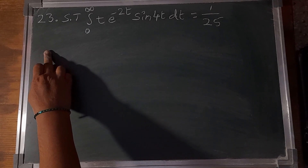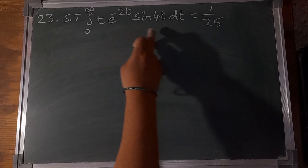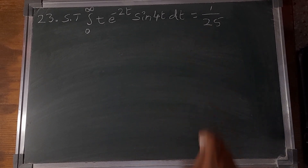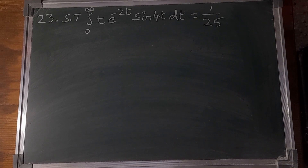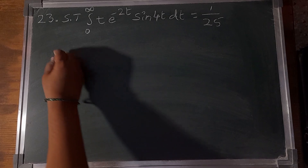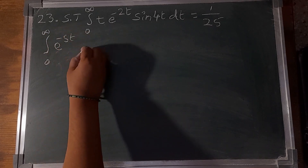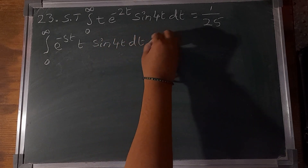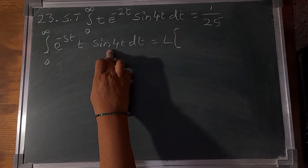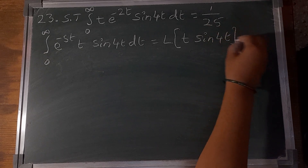Problem number 23: Show that the integral of 0 to infinity of t e^(-2t) sin(4t) dt equals 1/25. We know the Laplace transform definition, so the integral of 0 to infinity e^(-st) t sin(4t) dt equals the Laplace transform of t sin(4t). Call it equation number 1.